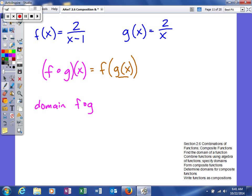Our g function is given to us as 2 over x. So when we find f of g of x, we're really going to find f of 2 over x, because that is what our g function represents. So we're going to take that value and plug it into our f function.